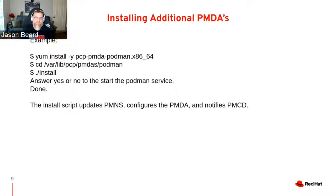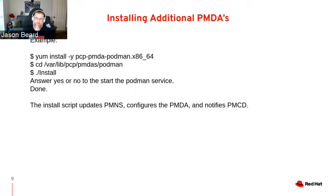On a particular host I have, I have Podman running a couple of containers. You just download the package and install as normal. Then you run an install script that asks you a few questions, and it adds itself into the Performance Metrics Namespace. It does a configuration of the PMDA and then notifies PMCD — it says, 'Hey, I'm out there, I'm running, start looking at the information I'm gathering.'